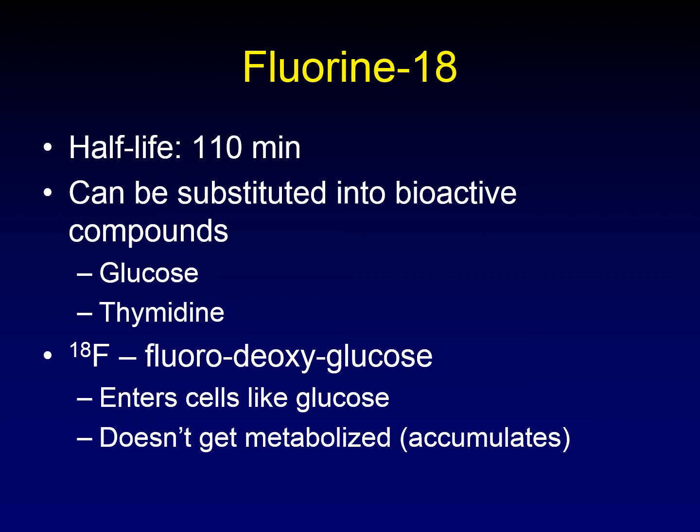Fluorine-18 can be substituted into bioactive compounds like glucose or thymidine. The most famous example is 18F fluorodeoxyglucose (FDG). Fluorodeoxyglucose acts a lot like glucose when injected into the body — it enters cells the same way glucose does, but it doesn't get metabolized. It just accumulates in cells that are glucose-hungry, making it even more effective than normal glucose at identifying those cells.